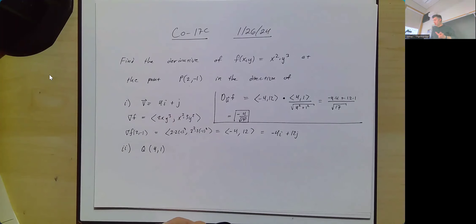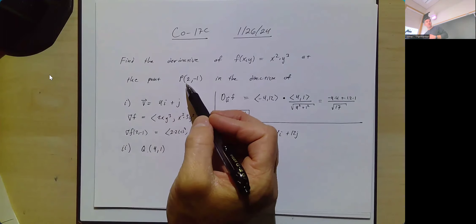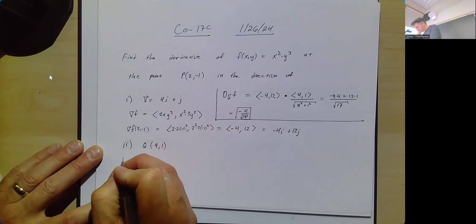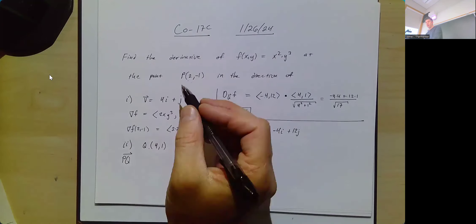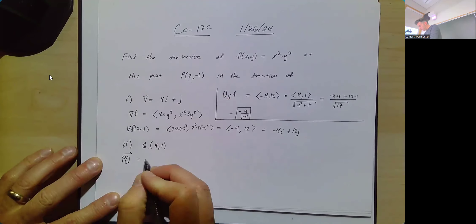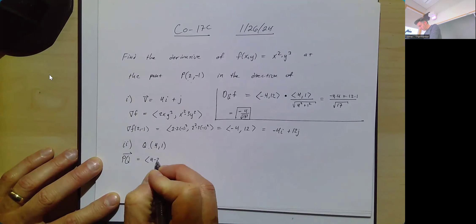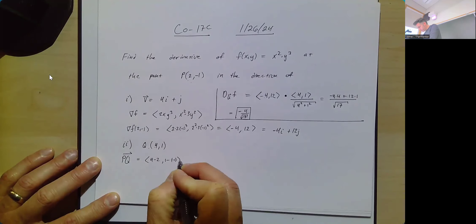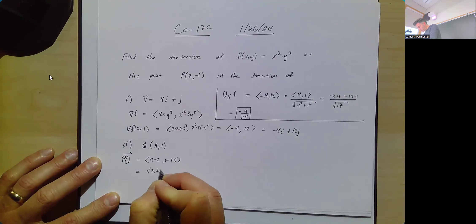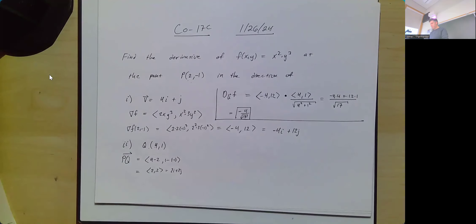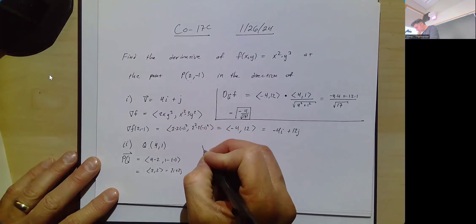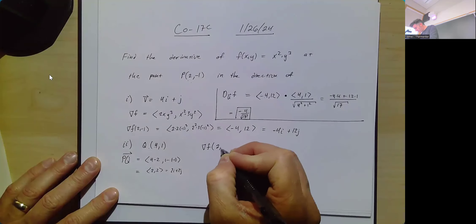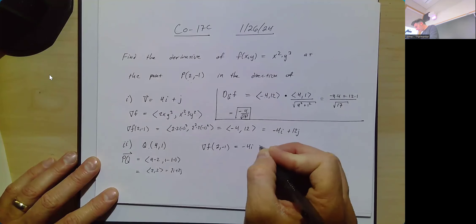We have to figure out our direction vector by taking the terminal point and subtracting the initial point. Our vector PQ starts at point P and ends at point Q, so it's (4-2, 1-(-1)) = (2, 2), or 2i + 2j. The good news is that the gradient was already found — the gradient of F at (2, -1) is still -4i + 12j.